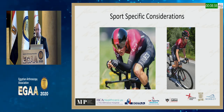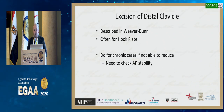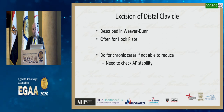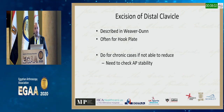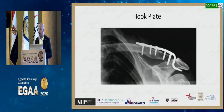Distal clavicle excision was originally described with the Weaver-Dunn and is often done with the hook plate. We tend to do it for chronic cases. When you excise the distal clavicle after reconstructing the CC ligaments, check AP stability because removing the AC ligaments may decrease AP stability. The hook plate has gone out of favor in the UK. Similarly, the Weaver-Dunn — transposition of the coracoacromial ligament into the excised distal clavicle — has been largely replaced by newer techniques. Hamstring graft is popular for chronic cases.